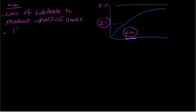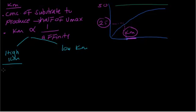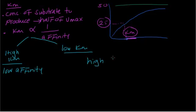The second thing about Km is that it is related inversely to affinity. If you have high Km, that means low affinity. If you have low Km, that means high affinity.